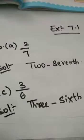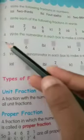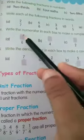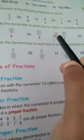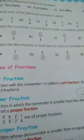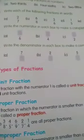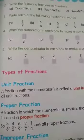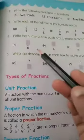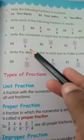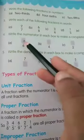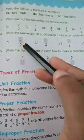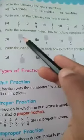Let me start the fourth bit. I am writing in the textbook only; you can also write in the textbook only. Fourth bit: write the numerator in each box to make a complete whole. Whole means 1. Numerator is above the dividing line, denominator is below the dividing line. So here we have to write the numerator.